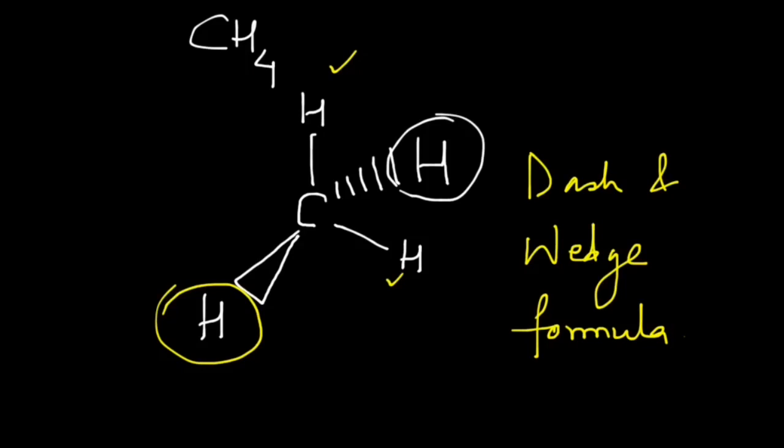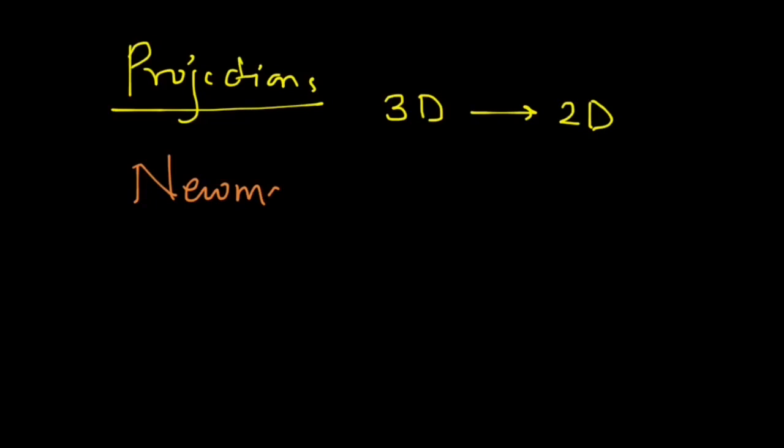Drawing these formulas to show conformations is a tough job, and so we have other methods to draw conformations, and those are projections. Projection is a way to represent 3D into 2D—that is, a three-dimensional object into a two-dimensional one. For organic molecules, we have several projections. I will write them down for you here. First is called the Newman projection.